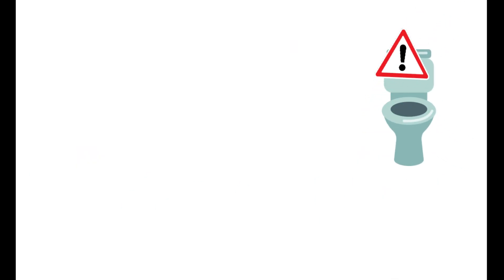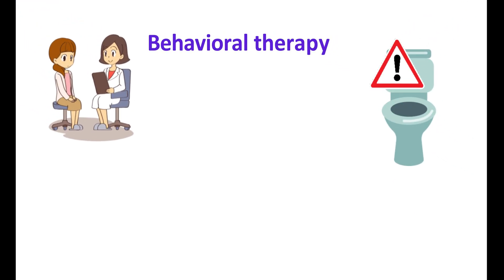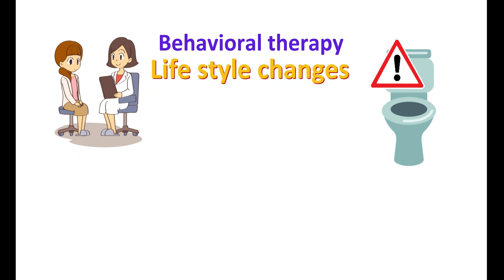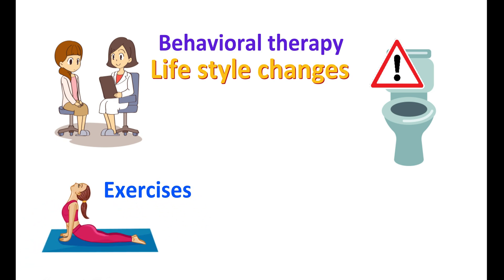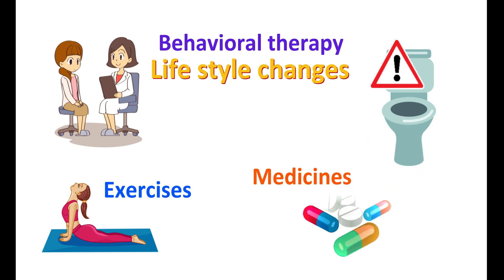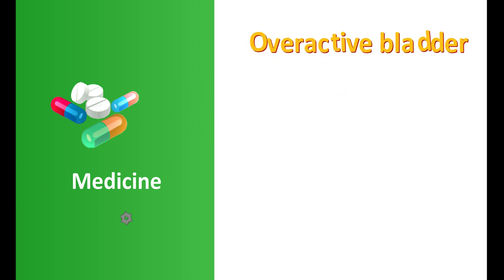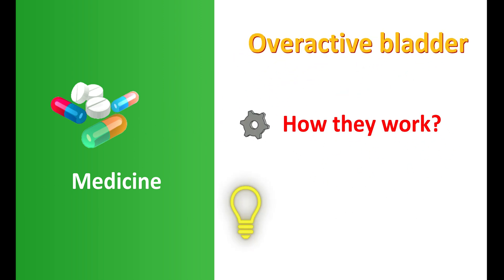Controlling these symptoms can be accomplished in many ways. Behavioral therapy involves lifestyle changes that can train people to control their bladders, and exercises that strengthen pelvic muscles can also help. However, when these methods are not sufficient, medicines can be used to relieve the symptoms. In this video, let's discuss the different types of medicine used to treat overactive bladder, how they work, and the facts to be noted while using them.